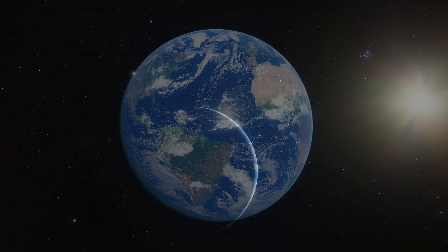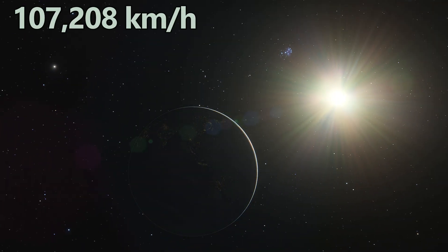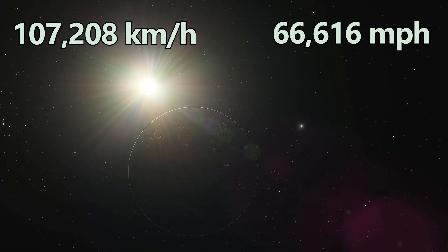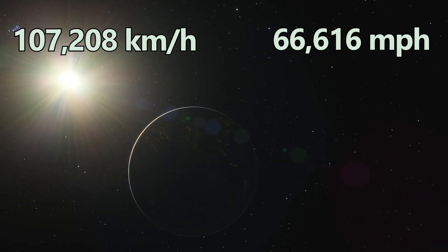At the same time, Earth orbits the Sun at around 107,208 kilometers per hour, which is about 66,616 miles per hour.